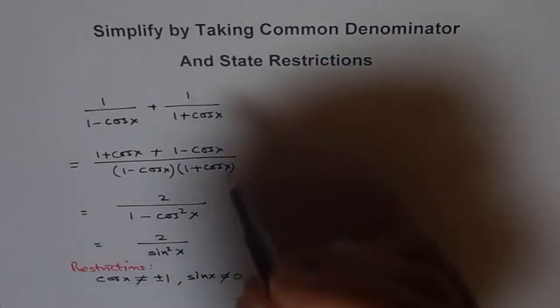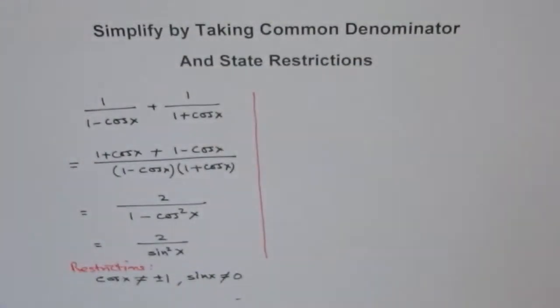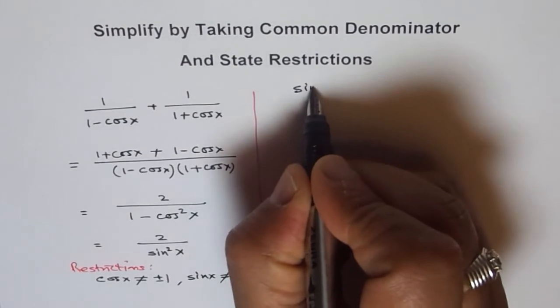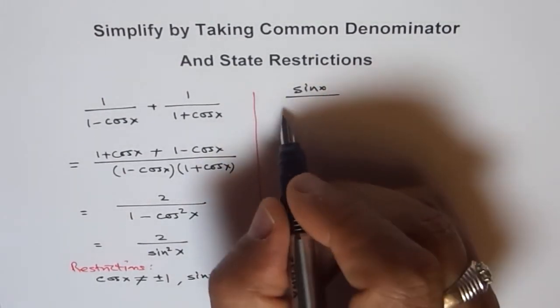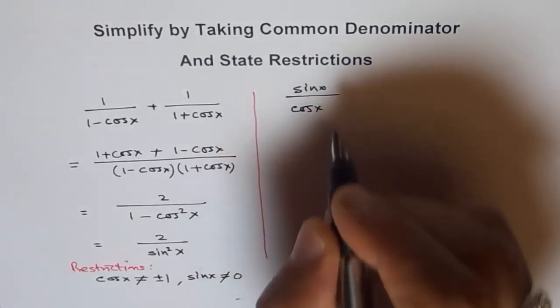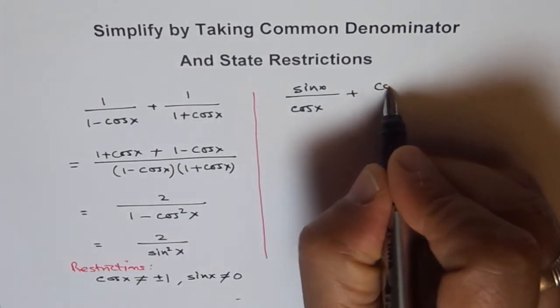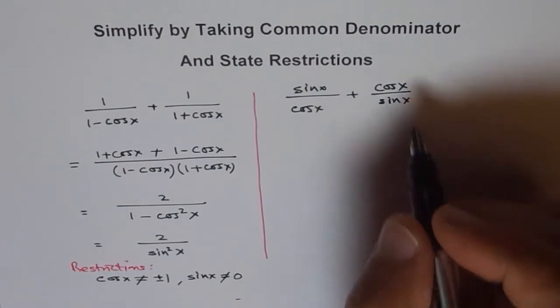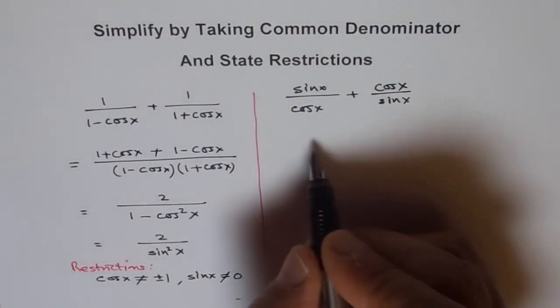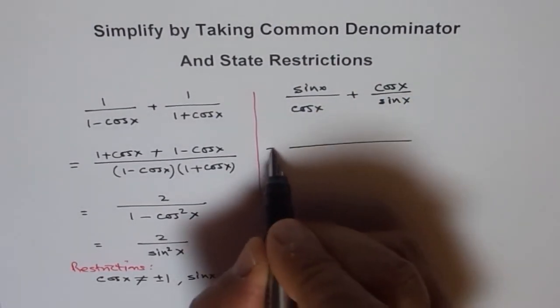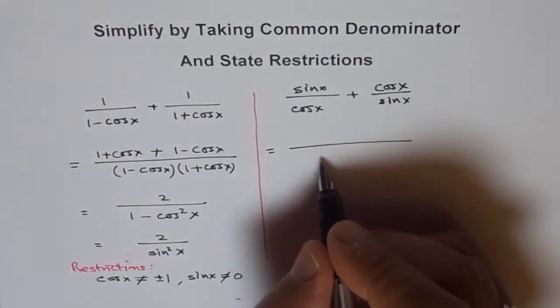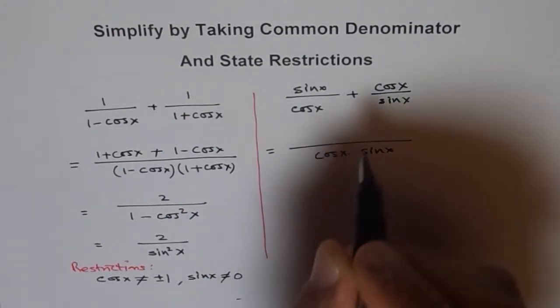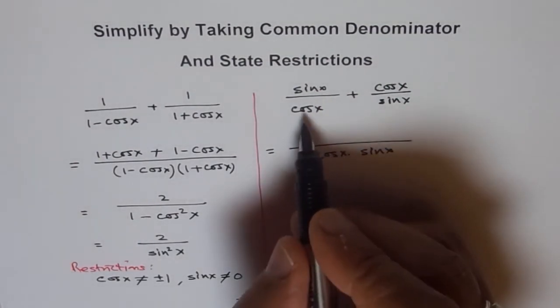Let me give you one more example here. And let's say we have something like sin x over cos x plus cos x over sin x. So what we can do here is we can take common denominator as before. So common denominator is cos x times sin x.